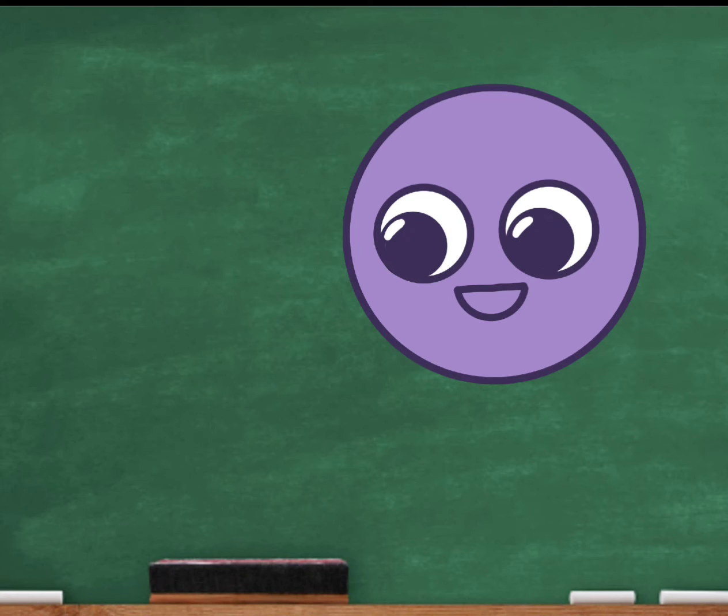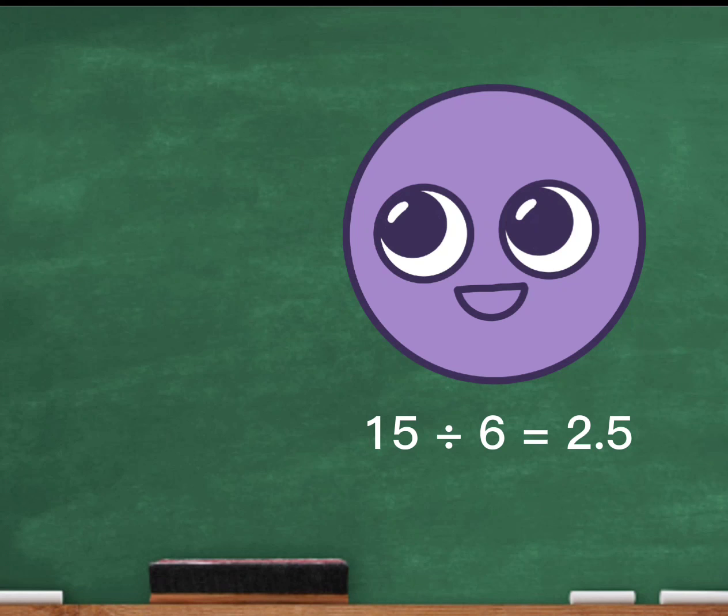Hexagon Jason also has to get shaped cupcakes for him and his friends for the party. The thing is, he and his brother also want some cake. He ordered 15 cupcakes for the party. 15 divided by 6 is 2.5.